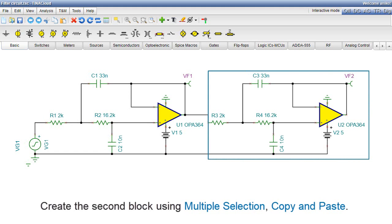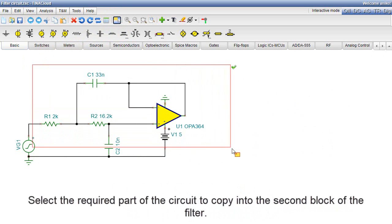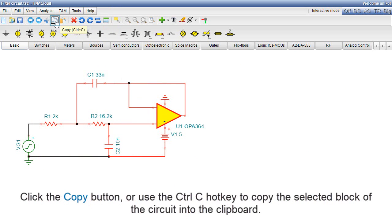Create the second block using Multiple Selection, Copy, and Paste. Press the Multiple Selection button. Using the mouse, now you can select and deselect components by Control-Clicking or by Multiple Selection. Select the required part of the circuit to copy into the second block of the filter. Click the Copy button, or use the Control-C hotkey to copy the selected block of the circuit into the clipboard.